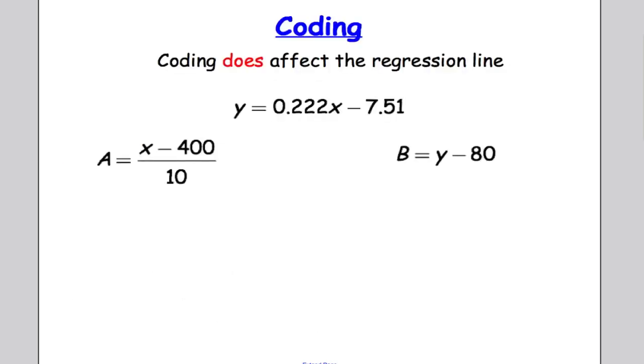Okay let's move on to the next bit and to do a coding. Now coding didn't affect the product moment correlation coefficient but it will affect the regression line. So in a question such as this where I'm told I'm given the regression line and then I'm told you that it was coded using this data I can actually work out the regression line of d on a.